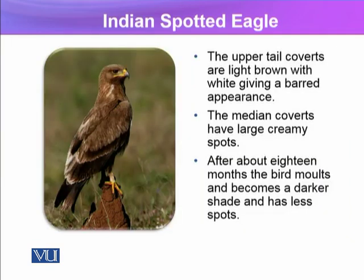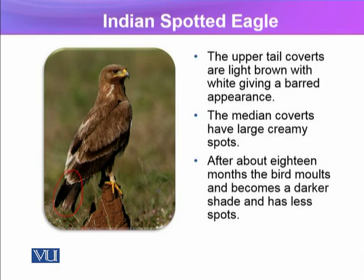The upper tail coverts are light brown with white, giving a banded or beard-like appearance. In the tail feathers, two colorations are visible. Overall, the body shows a distinct striped pattern — dark then light bands — creating a color-wheel sort of gradient where colors are darker on top and become lighter going down. The median coverts have large creamy spots. After about 18 months, the bird molts and becomes darker with fewer spots.